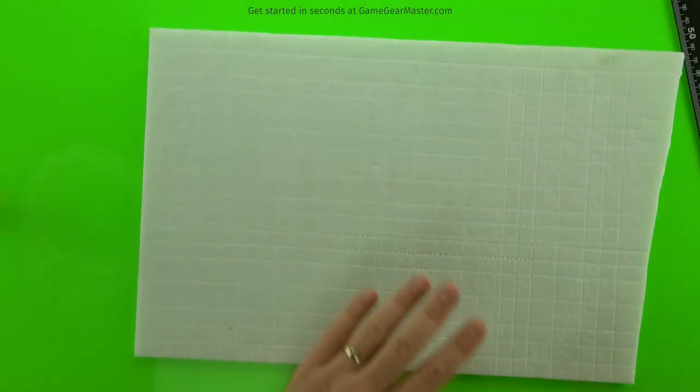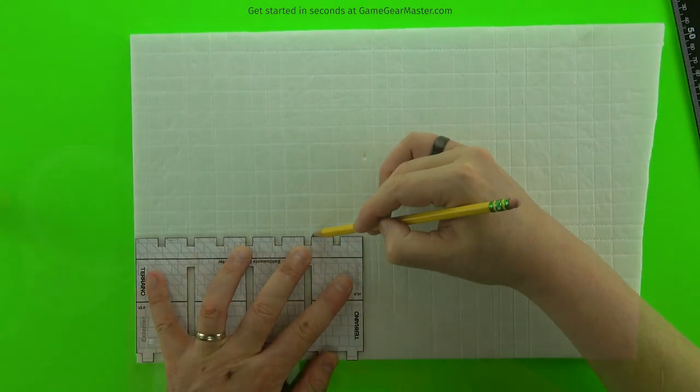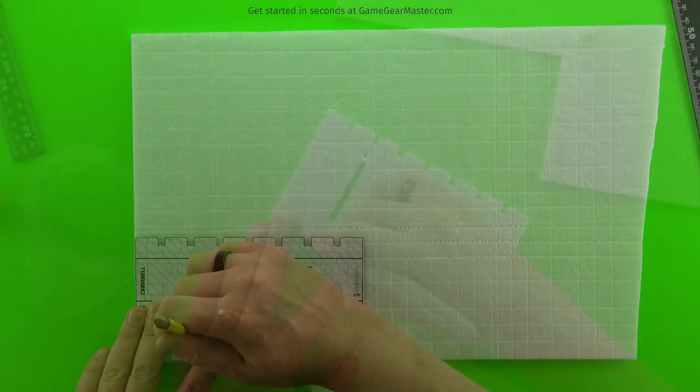We'll start by tracing on the crenellations template to a piece of pre-textured foam board, and then just cut out the voids.